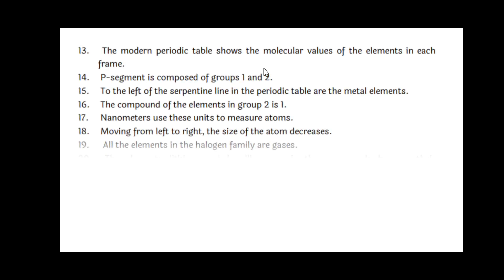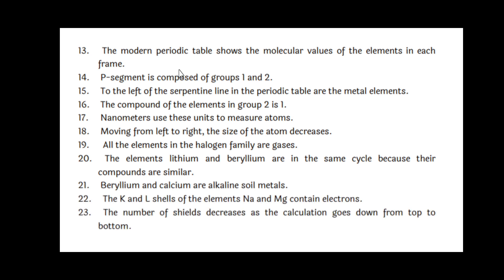The modern periodic table shows the molecular values of the elements in each frame. The P-segment, that is the P-block, is composed of group 1 and 2. That is wrong. To the left of the serpentine line in the periodic table are the metal elements. You can see the serpentine line in the periodic table. This is right. The compound of the element in group 2 is 1. Wrong. Nanometer is used as units to measure the radius of the atoms. Wrong.